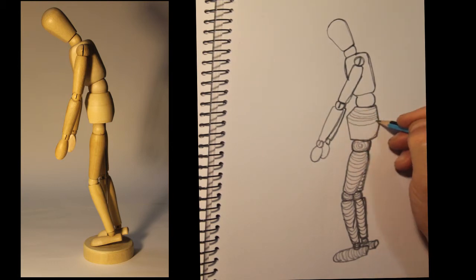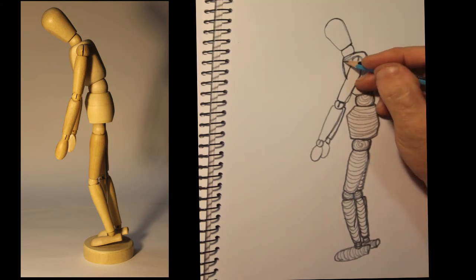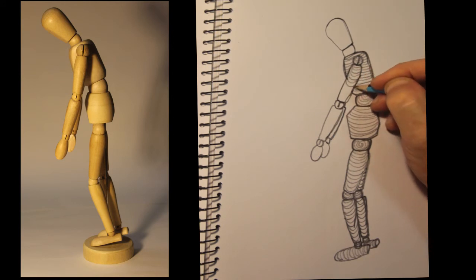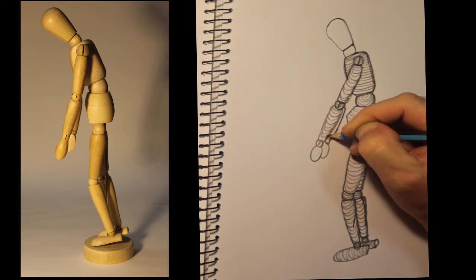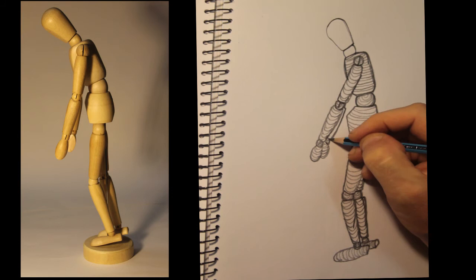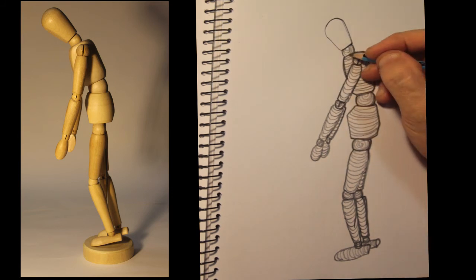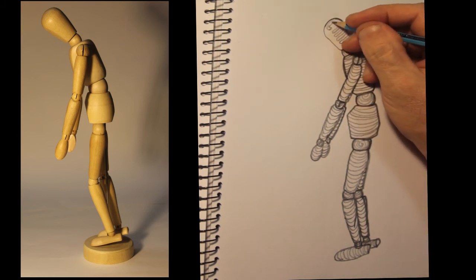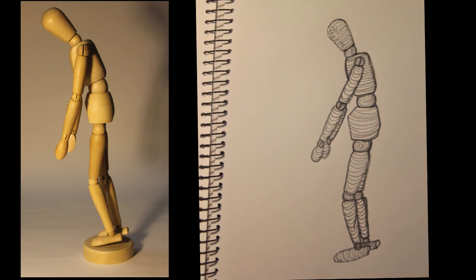So once you've finished watching me draw this drawing, I'd like you to do the same. I'd like you to draw the model in your sketchbook. And then after you've done this exercise, you can draw anything else that you want in your sketchbook in the line section that we're working on, as long as it's made out of lines. And that's the end of the lesson.